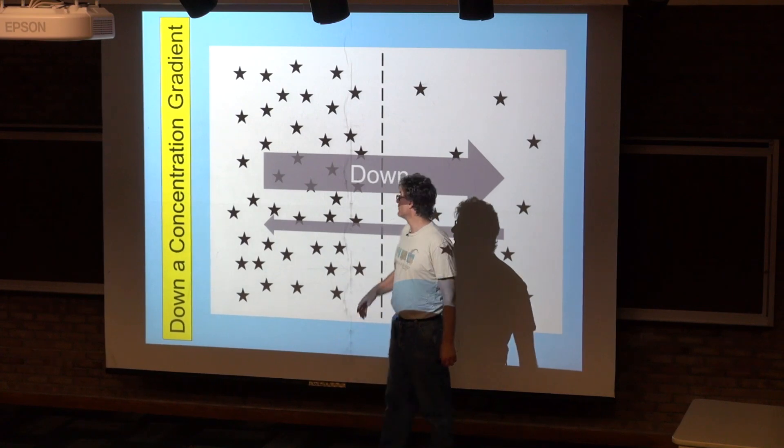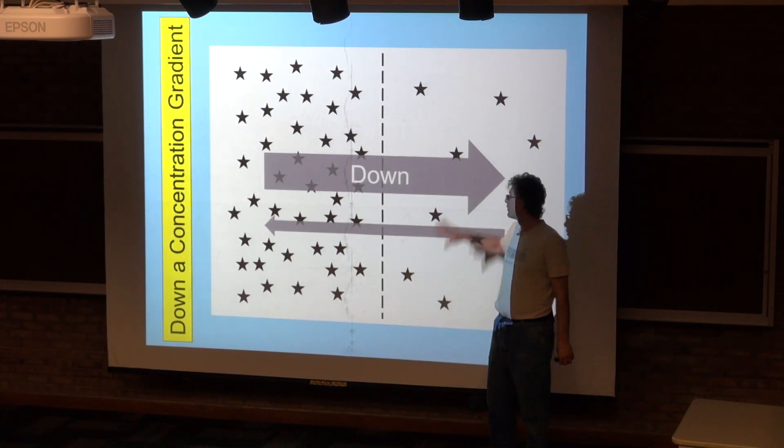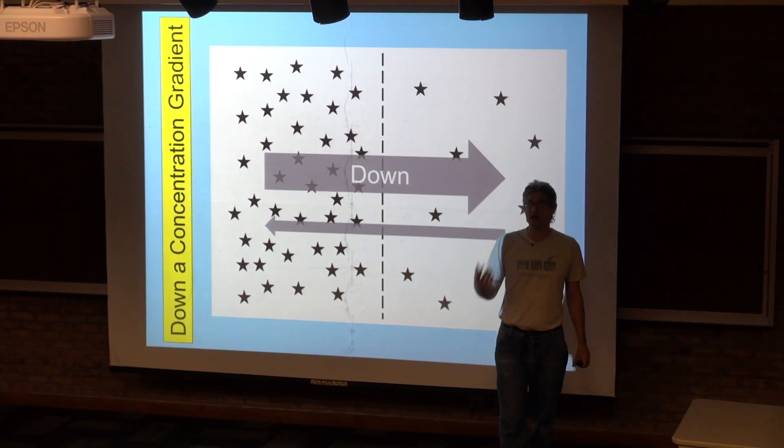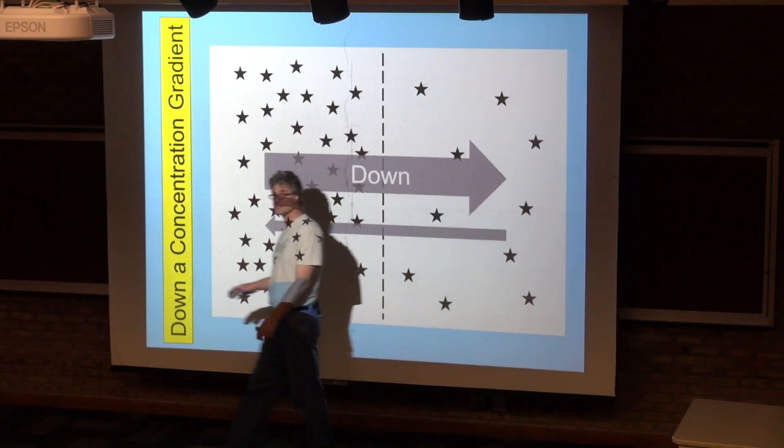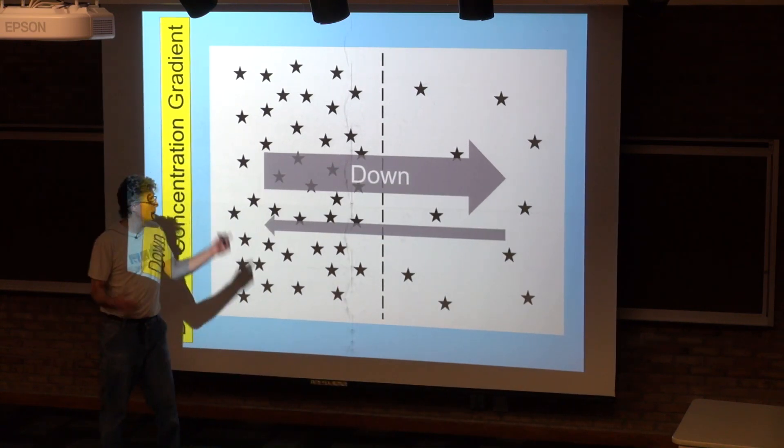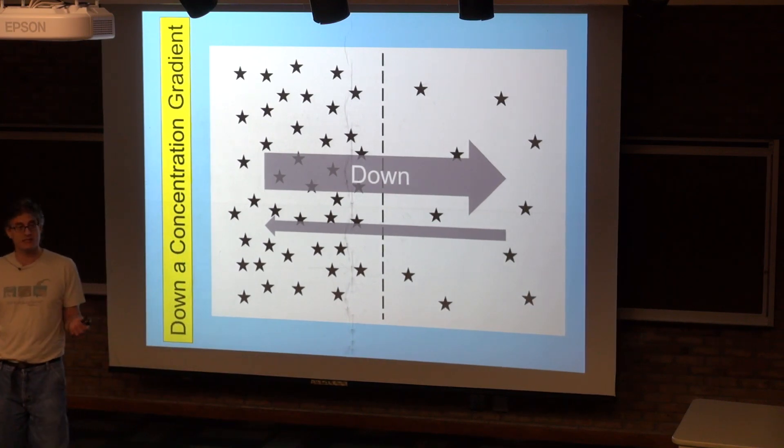So overall there's net movement going in this direction rather than the other direction. And that will continue until the concentration is the same on both sides, at which point the rate of movement in both directions will be the same and that's equilibrium, that's dynamic equilibrium.